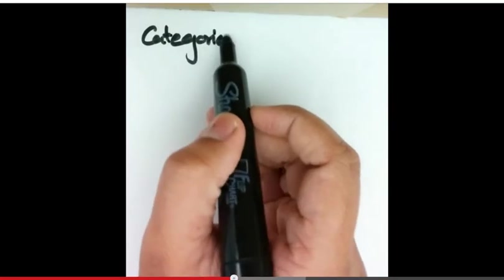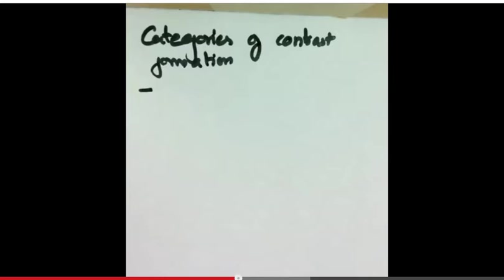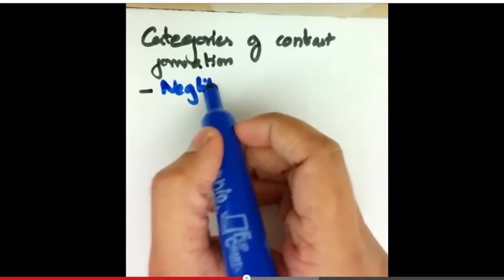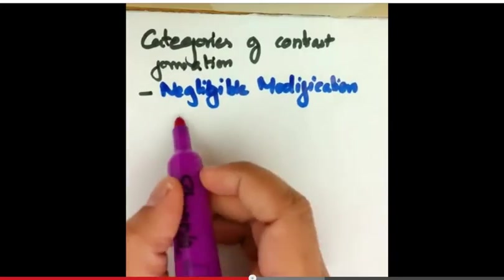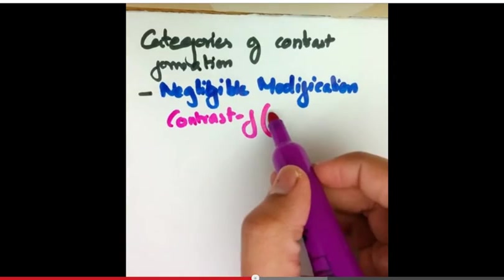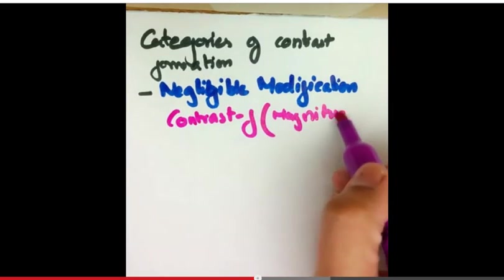As the tip passes through the sample, the tip sample position could vary. This variation would reflect in the makeup of the image. There are three major categories for contrast formation. In negligible modification, the tip does not interact much with the sample, and there is very negligible change in the tip sample position. In this case, the contrast is a function of the magnitude of the stray field.